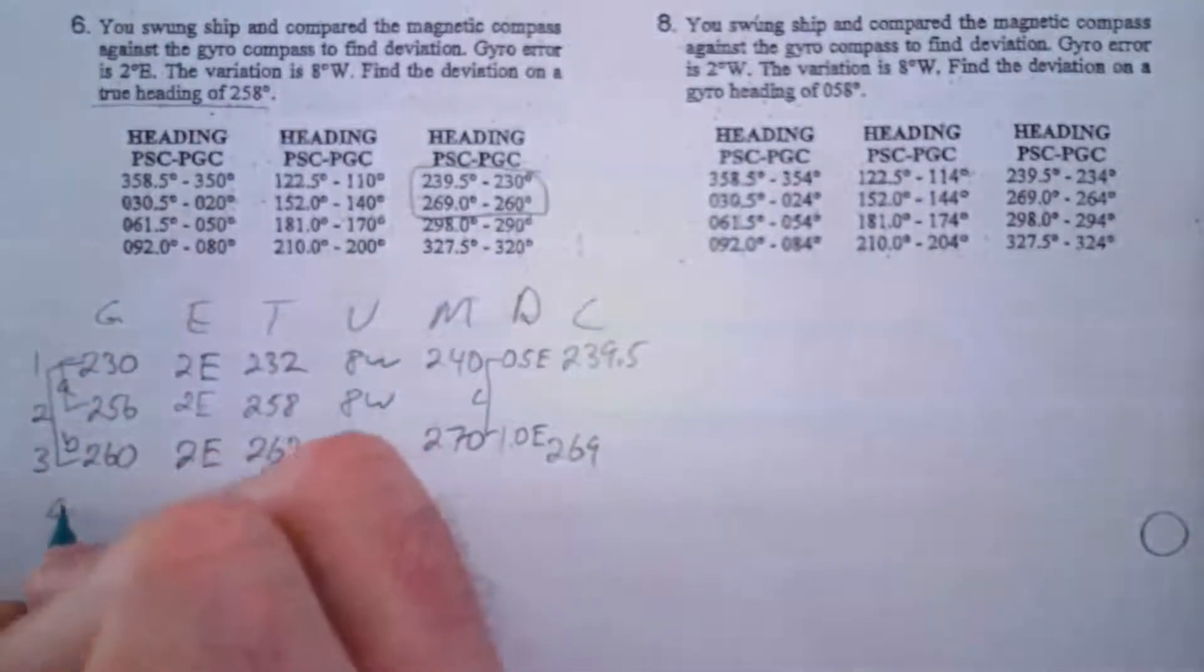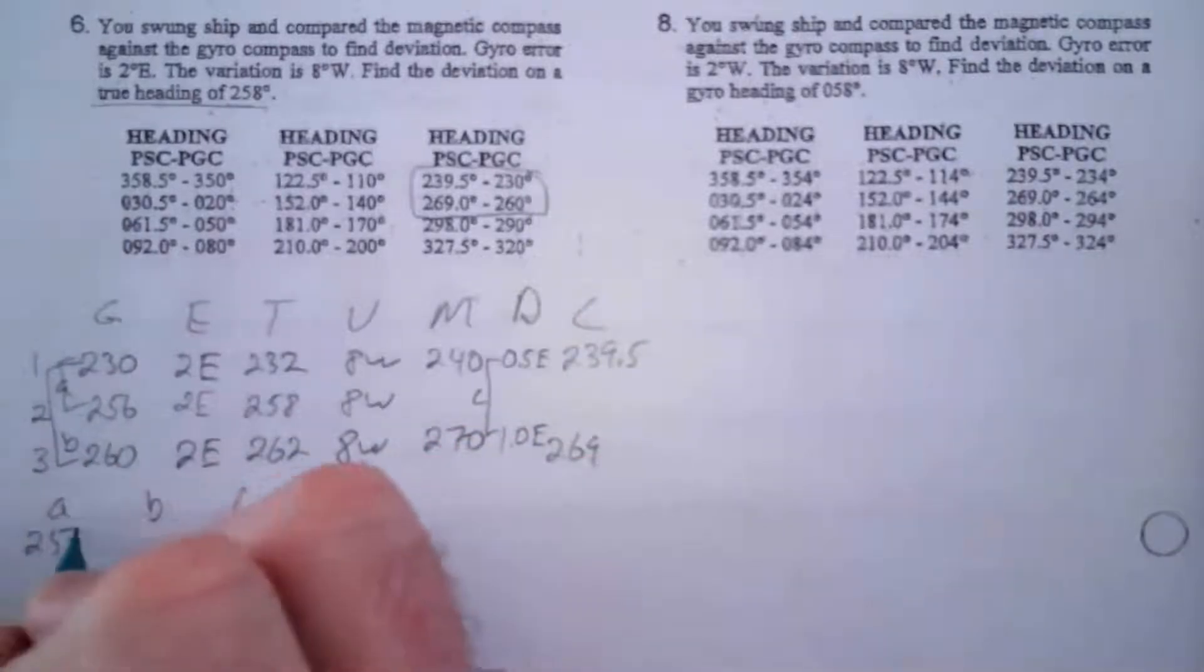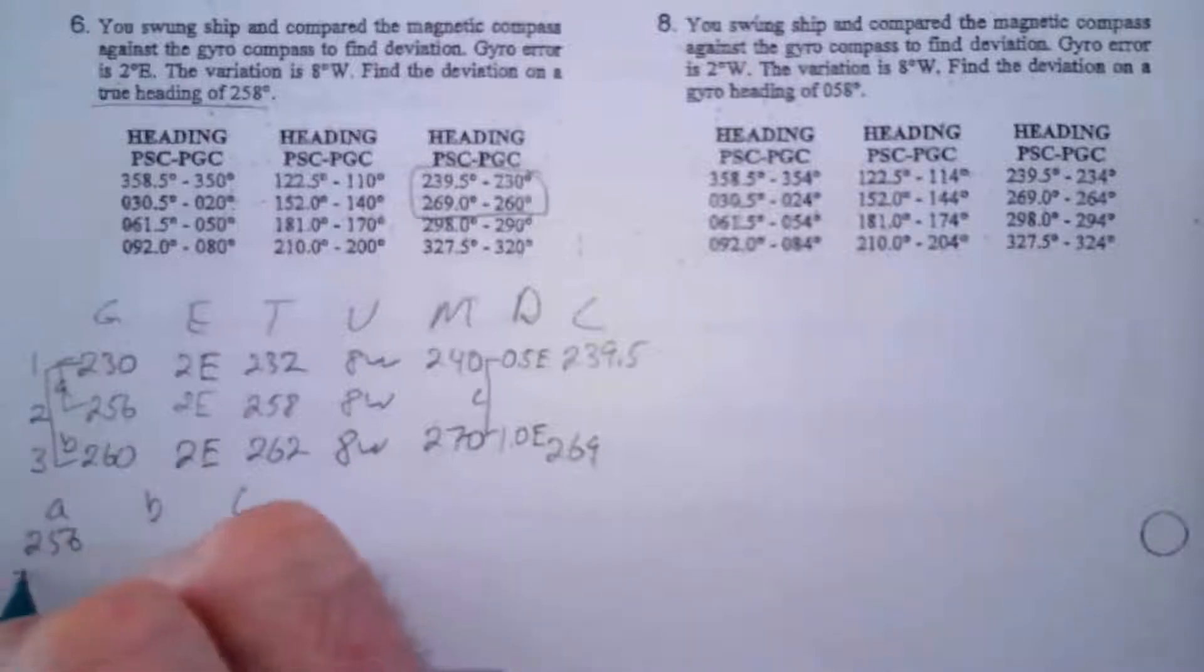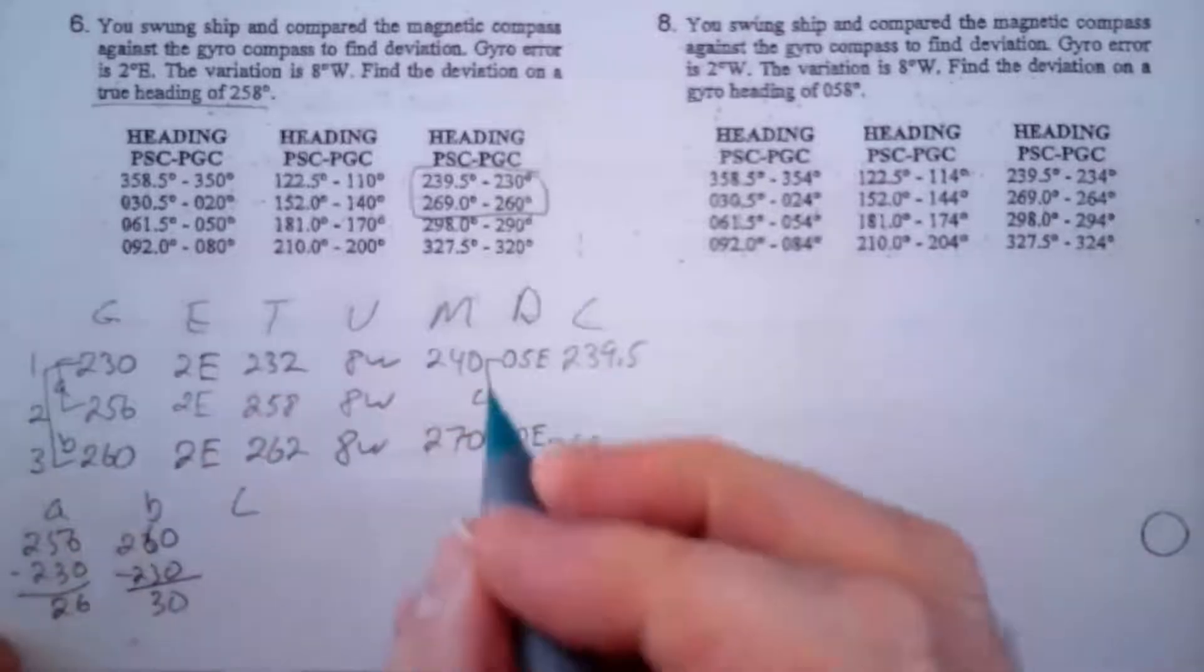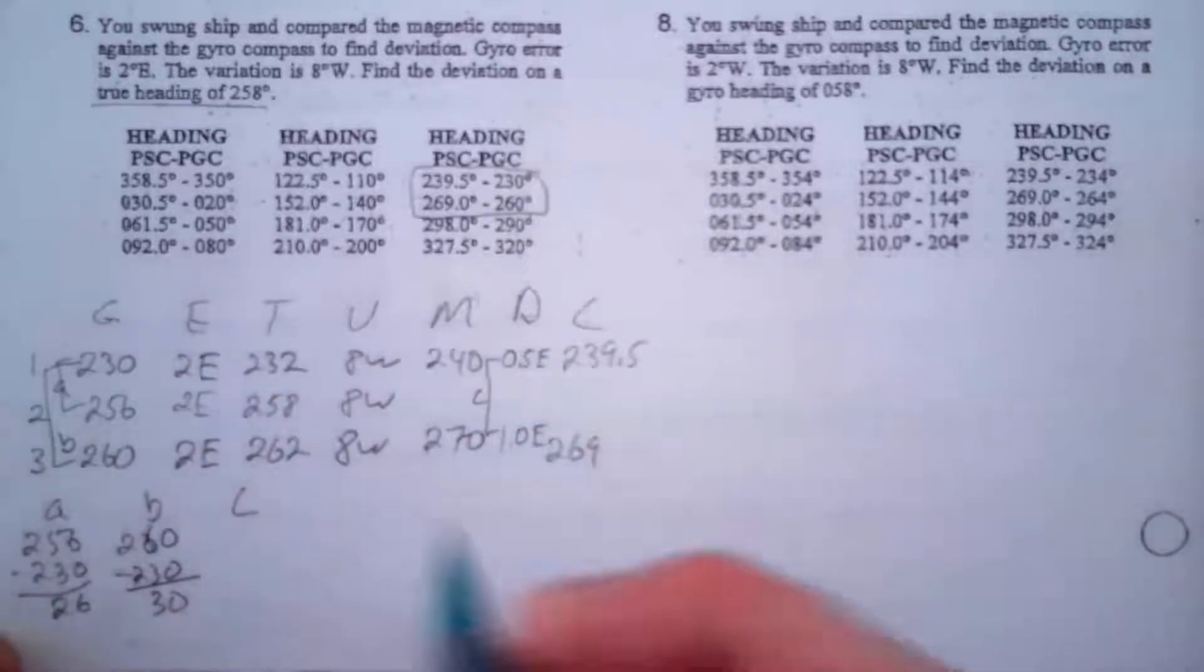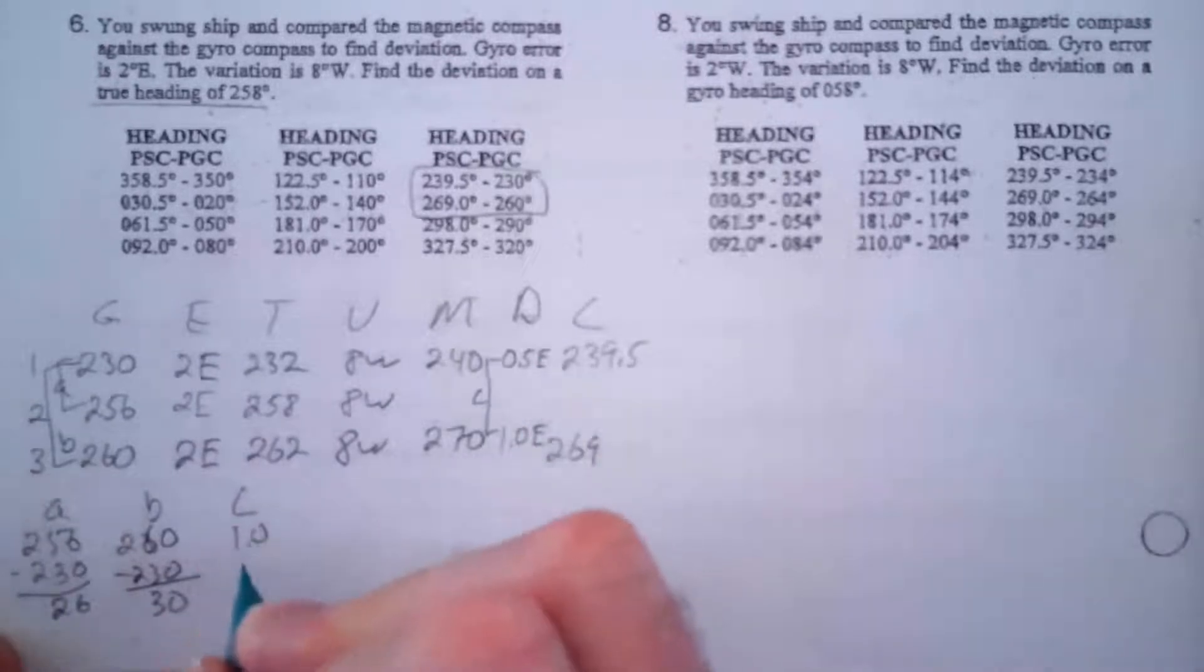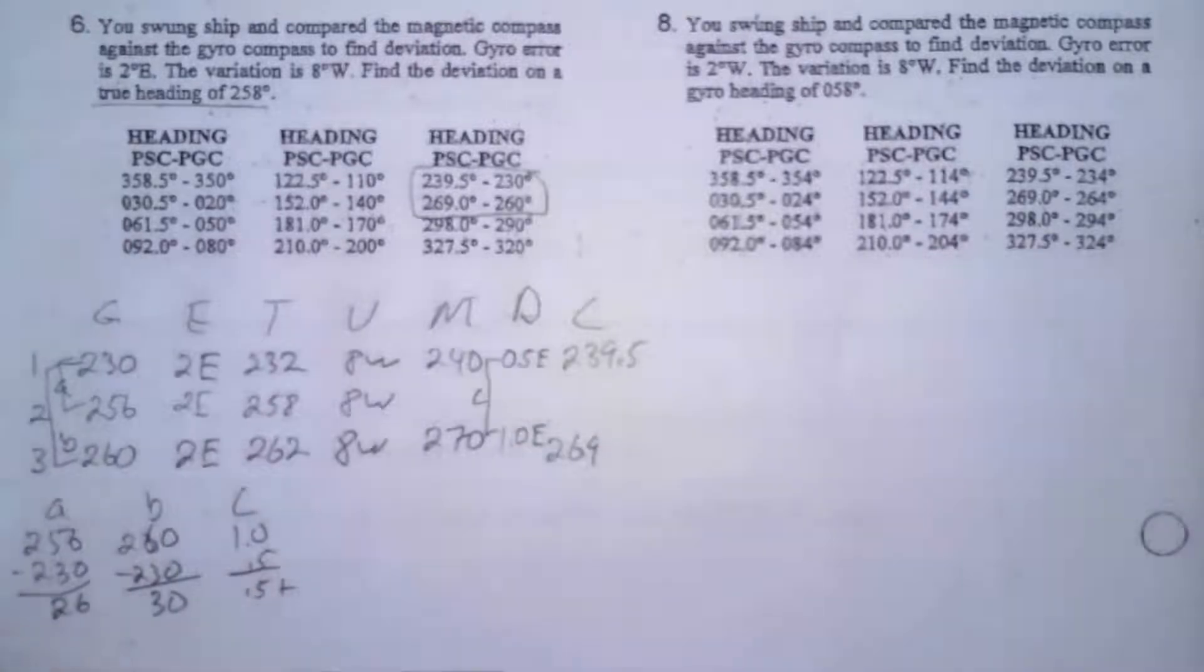So let's calculate what A and B and C are. A is 256 minus 230, so that's 26. B is 260 minus 230, so that's 30. And C is the difference between 0.5 and 1. They're both east, so I'm going to subtract 1.0 minus 0.5, that's 0.5 and it's getting bigger because I'm going from 0.5 to 1.